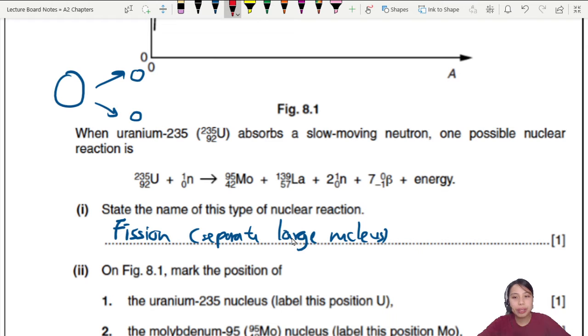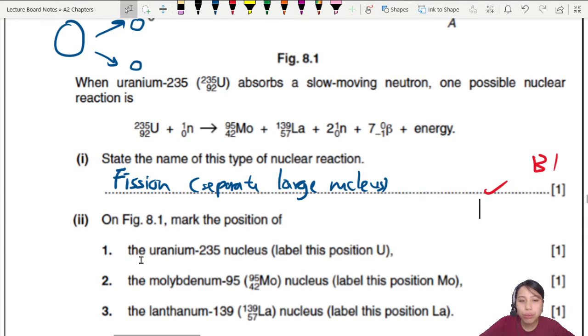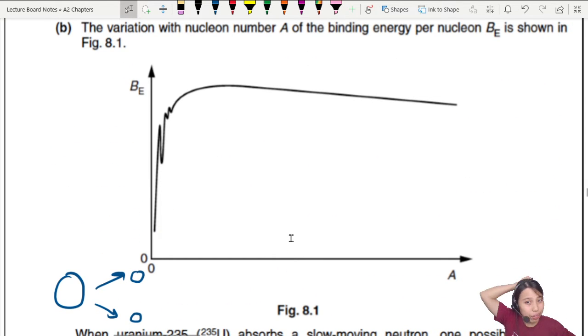On the figure, mark the position of uranium-235. Where's uranium-235? You just need to know it's somewhere near the end of the line on the right side, so maybe here. Call this U. You can go look at the notes earlier and see where the positions are. If you can memorize the positions, even better.